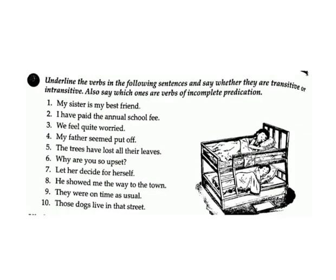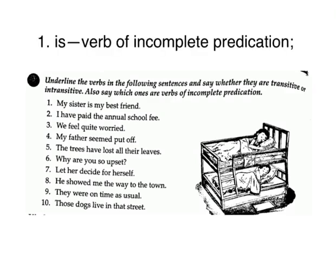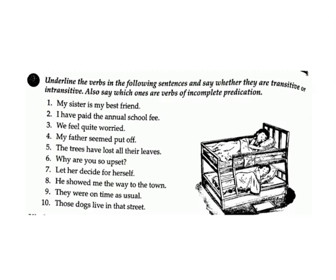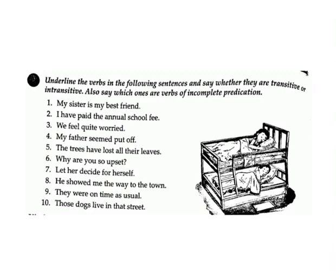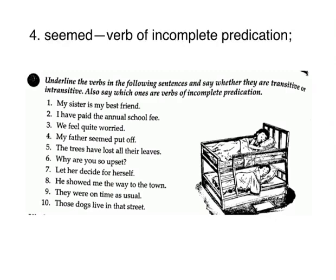Exercise D: Underline the verbs in the following sentences and say whether they are transitive or intransitive. Also say which ones are verbs of incomplete predication. 1. My sister is my best friend. Answer: is — verb of incomplete predication. 2. I have paid the annual school fee. Answer: have paid — transitive. 3. We feel quite worried. Answer: feel — verb of incomplete predication. 4. My father seemed put off. Answer: seemed — verb of incomplete predication.